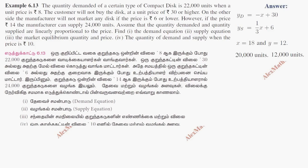Hi students, this is Alex here. Example 6.13. The quantity demanded for a certain type of compact disc is 22,000 when the unit price is 8. So quantity demanded is 22,000 when the price is 8.